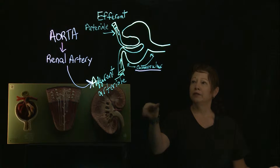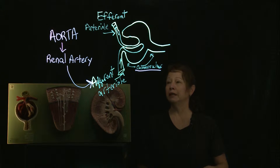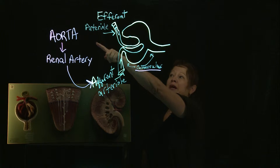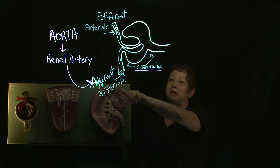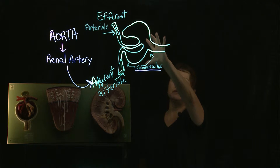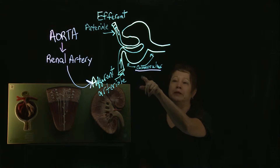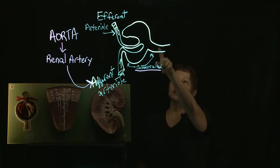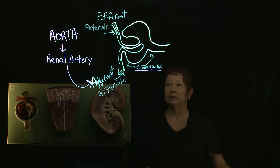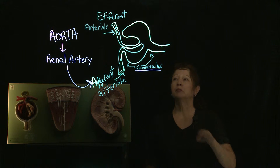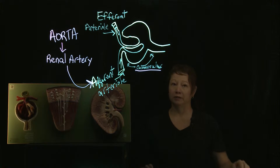A brief physiology review — this is the glomerulus, which is the functional unit of the kidney. The blood supply comes in from the aorta to the renal artery, and the blood supply that goes into the glomerulus itself is carried by the afferent arteriole. It exits from the glomerulus via the efferent arteriole — it's still oxygenated arterial blood, but it exits through the efferent arteriole and goes on to supply the rest of the kidney parenchyma.